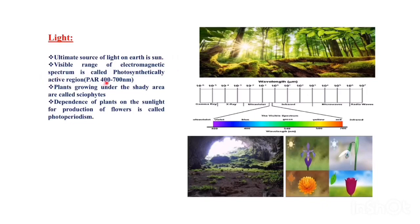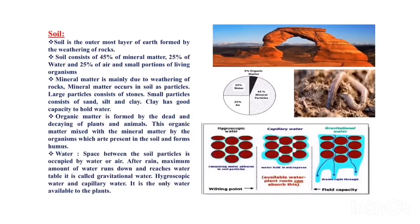Plants growing under shady areas are called sciophytes, and plants growing under well-lit areas are called heliophytes. The dependence of the plant on sunlight for the production of flowers is known as photoperiodism.